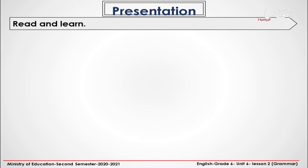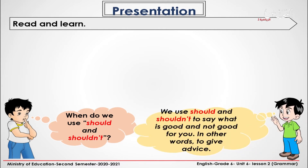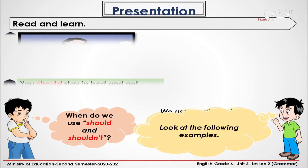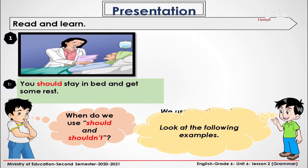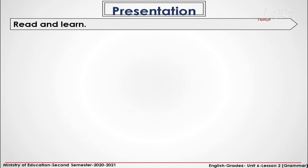Read and learn. When do we use should and shouldn't? We use should and shouldn't to say what is good and not good for you — in other words, to give advice. Now, look at the examples in front of you. In the first picture, you should stay in bed and get some rest. In the second picture, you shouldn't go to school today. Let's read and learn.